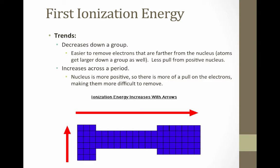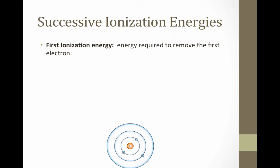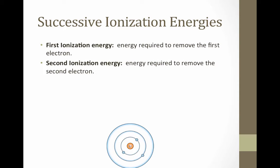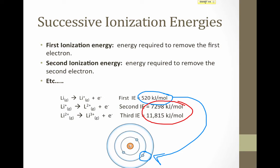Here's a picture summarizing these trends. We can also talk about successive ionization energies. If first ionization energy is the energy required to remove the first electron from an atom, second ionization energy is the energy required to remove the second after the first has been removed, and so on and so forth. Here are the three ionization energies for a lithium atom. We see that the first ionization energy is quite small as compared to the second and the third, with a significant jump from the first to the second.